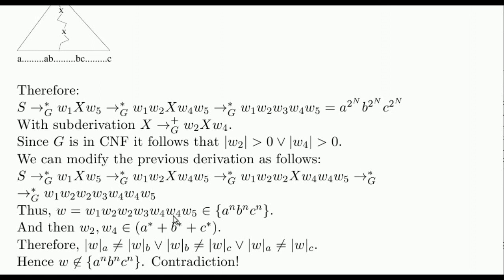Summarizing, W has some additional symbol compared to the initial word since either W_2 or W_4 is not empty, but they either do not add As or do not add Bs or do not add Cs. Therefore, it cannot have the same amount of As, Bs and Cs. Thus, it is not in the language. This is a contradiction since we had deduced that it was in the language.